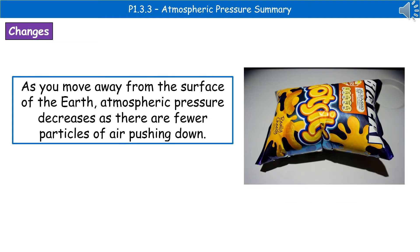If we actually start to move away from the surface of the Earth, and the best example of this is when you're on a plane that's taking off, then what we find is you're moving further from the surface of the Earth, and therefore atmospheric pressure decreases the further from the surface you go. And the reason for that is that the higher up you go into the atmosphere, the fewer particles of air there are pushing down on you.